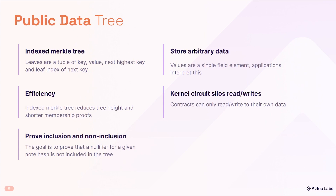The public data tree is used for any globally publicly viewable data. Public data is useful for many of the use cases we see in blockchains today, such as transparent token supplies, automated market makers, and auditability of borrowing and lending protocols, just to name a few. The tree can be used to store any arbitrary data, and similar to the note hash and nullifier trees, contract data is siloed per contract so they can only read and write to their own state. The public data tree is an indexed Merkle tree that is updated by the sequencer when executing public functions. It supports efficient membership and non-inclusion proofs. Because this tree is empty from the start, a sequencer must prove an empty key with a non-inclusion proof to insert a value, or prove membership of a value associated with a key to update it.